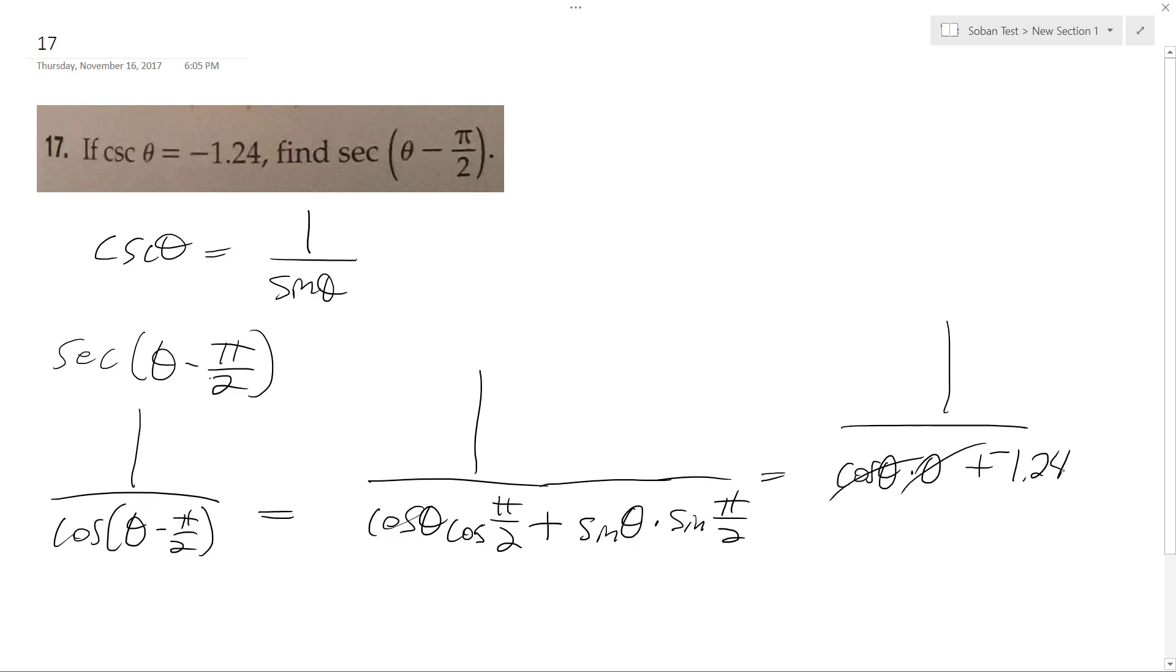And then, sine of pi over 2 is just 1. So what I end up with is 1 over negative 1.24.